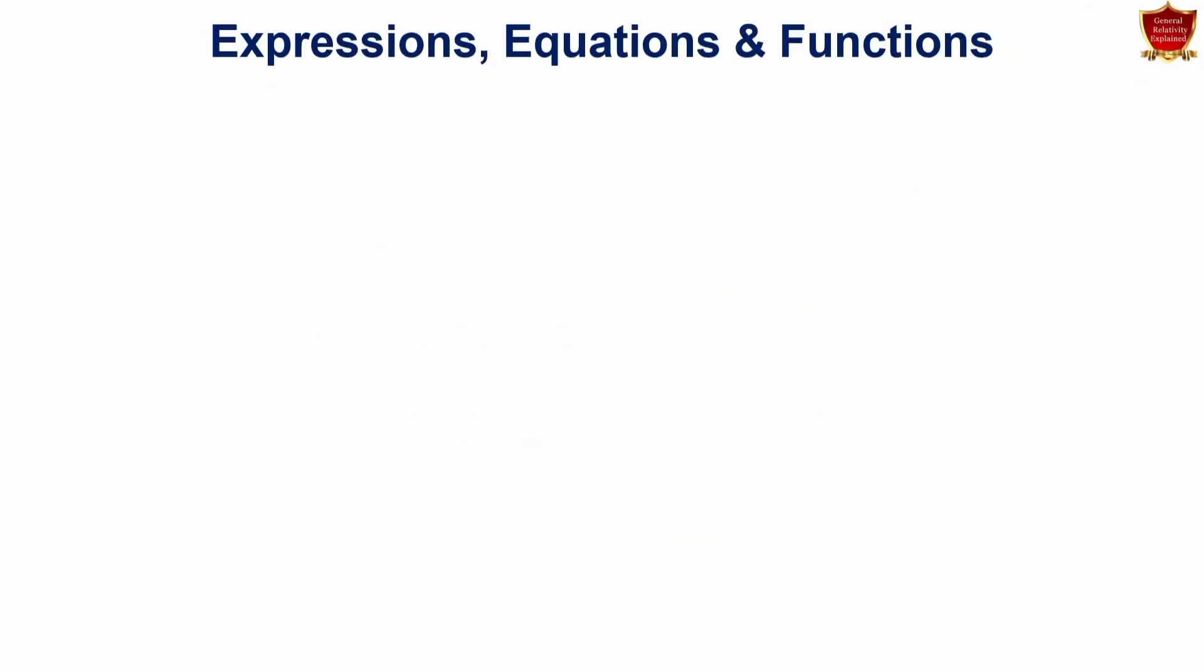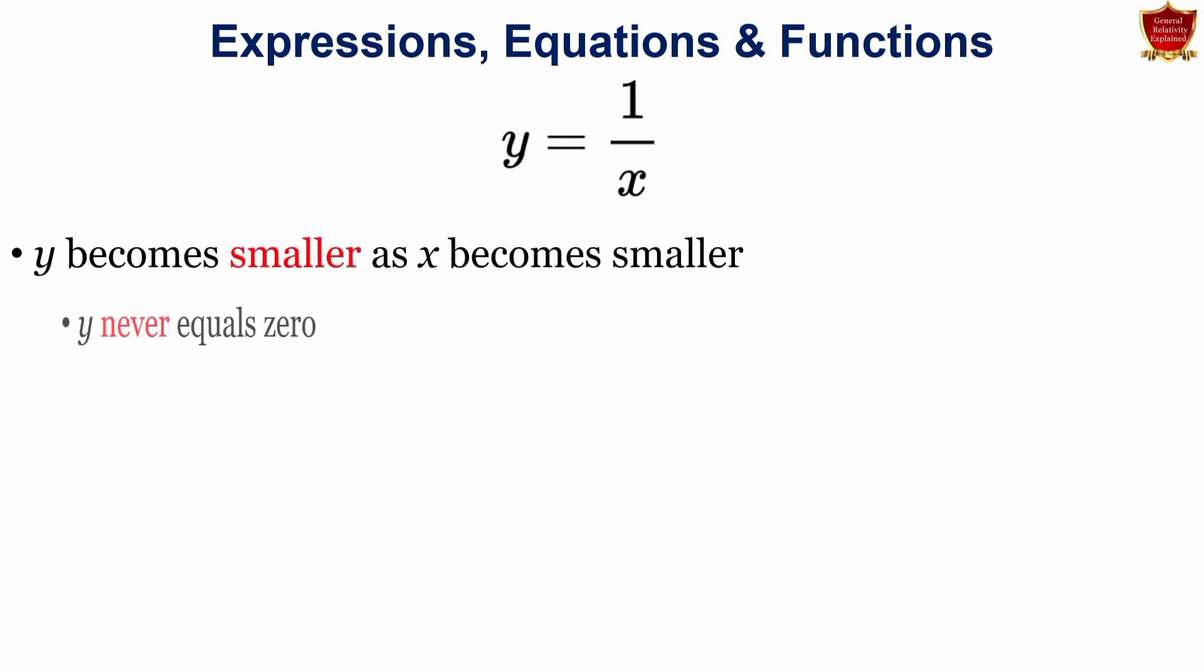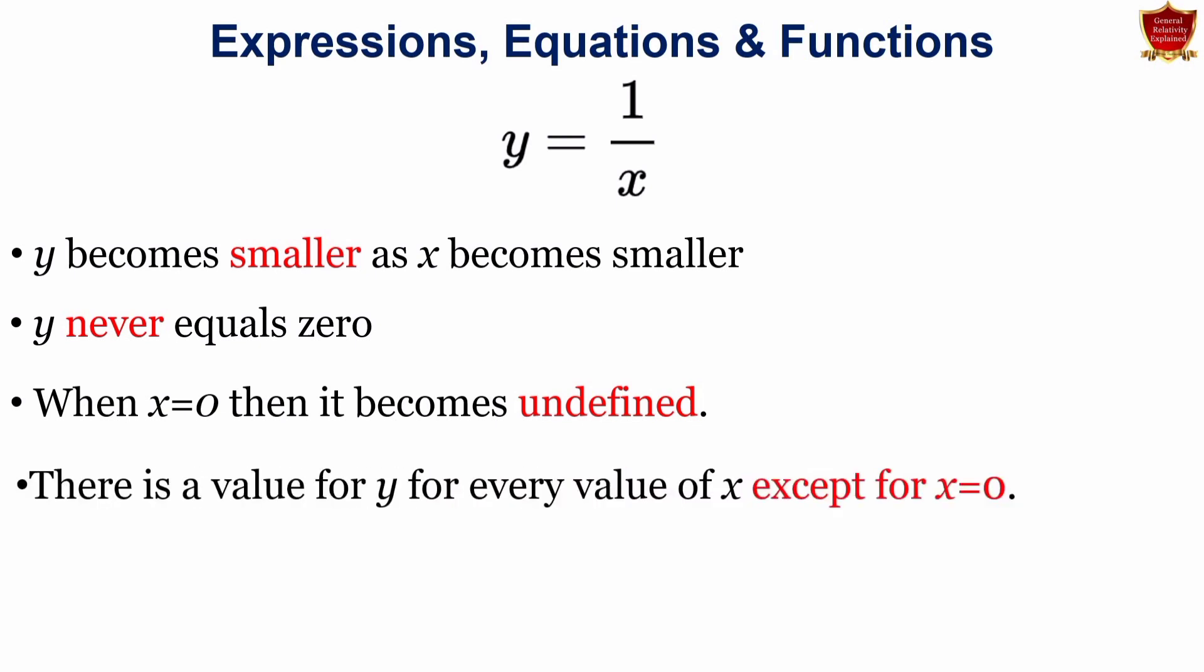We move on to the further example where we find y equals to 1 by x. So here it also implies y becomes smaller as x becomes bigger. y never equals 0. When x equals to 0, the function becomes impossible to calculate. That is, we call it undefined because dividing by 0 is undefined, not possible. Therefore, there is a value of y for every value of x except when x equals to 0. Because if we get x equals to 0, it becomes basically undefined.